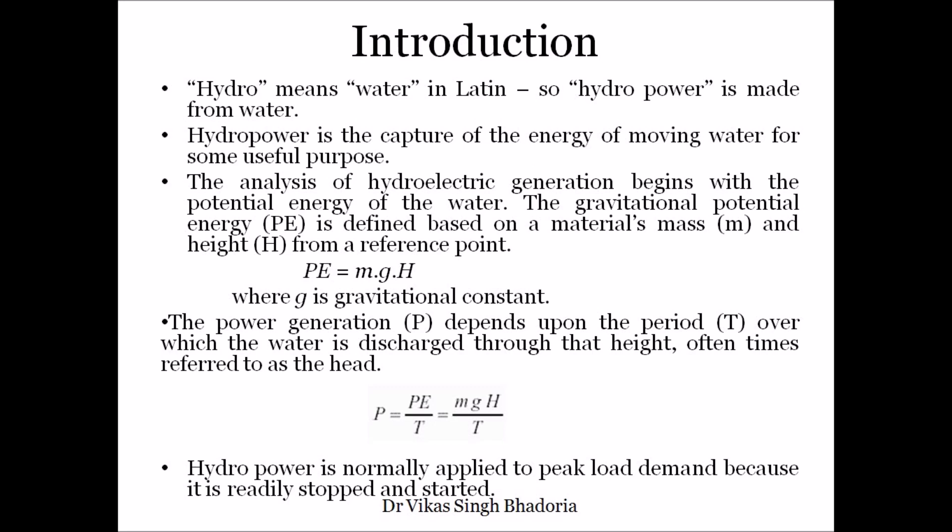Then the potential energy is again converted into kinetic energy as water flows through the penstock. The kinetic energy of water is then converted into mechanical energy at the turbine blades, and when the turbine rotates the alternator, that mechanical energy is converted into electrical energy. So the overall energy conversion is: kinetic → potential → kinetic → mechanical → electrical energy.